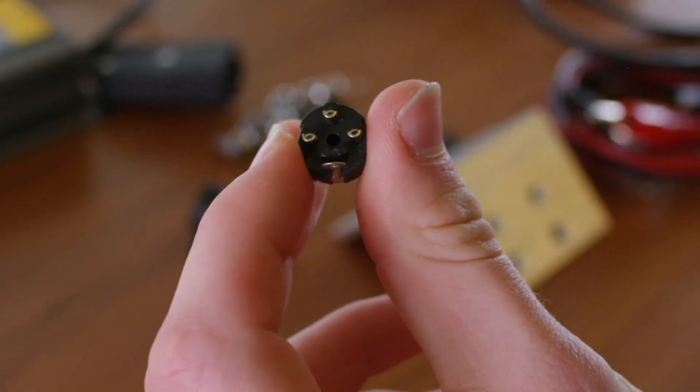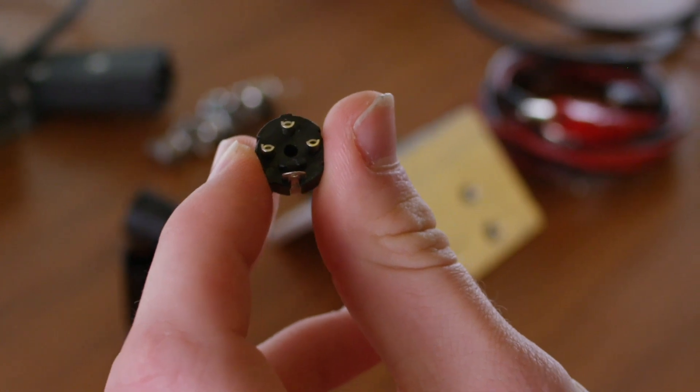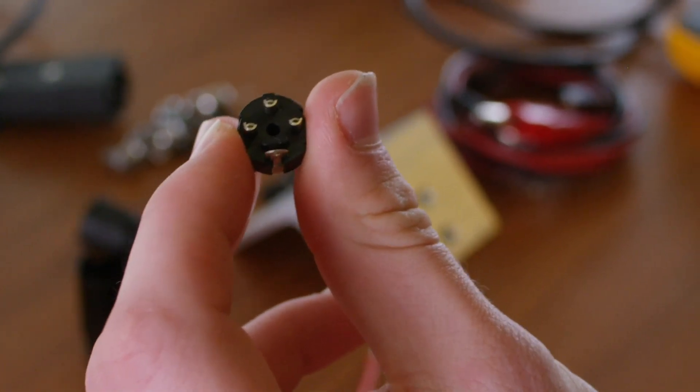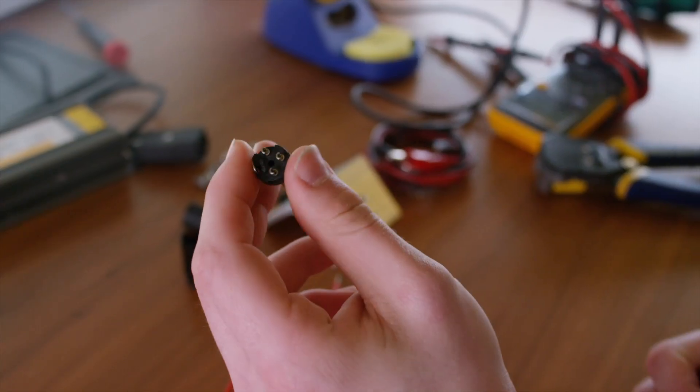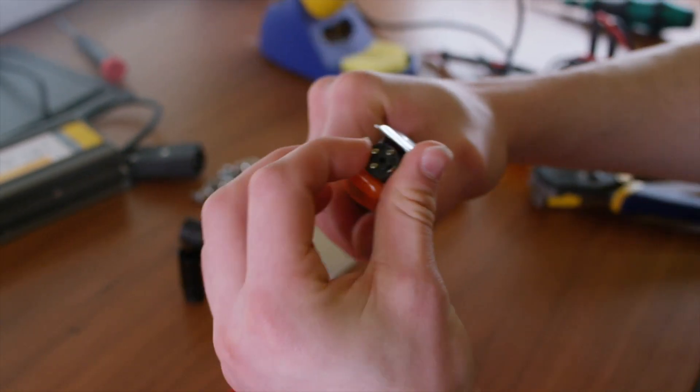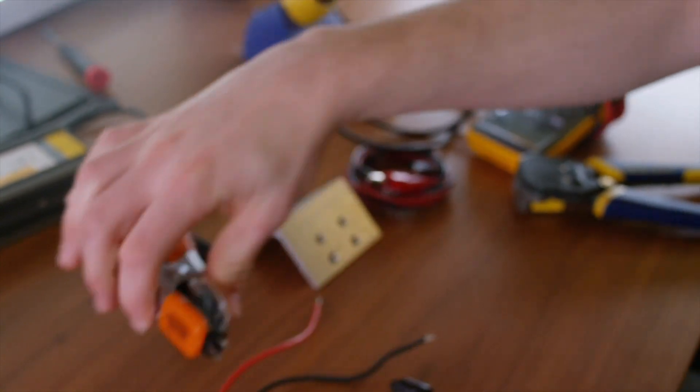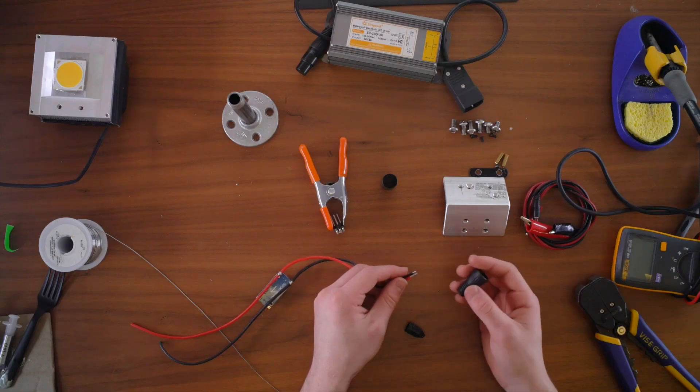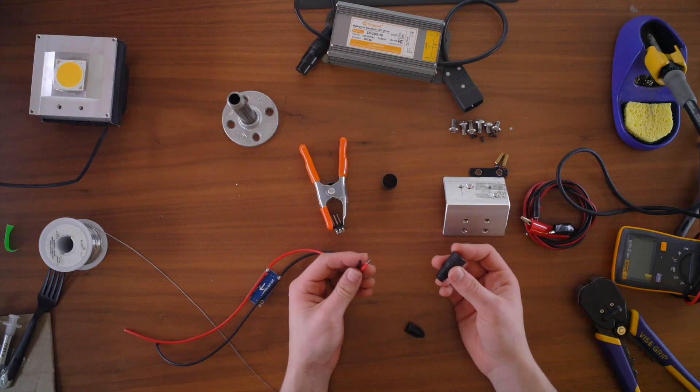Now there are three pins on the back labeled one, two, and three. We're going to be using pins one and two. One is going to be negative and two is going to be positive. And go ahead and grab this connector with the solder cups facing up in a clamp. Then we can set it down for soldering.